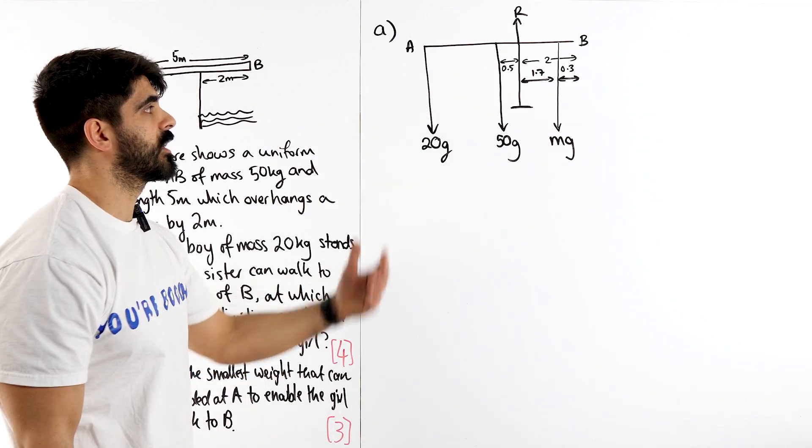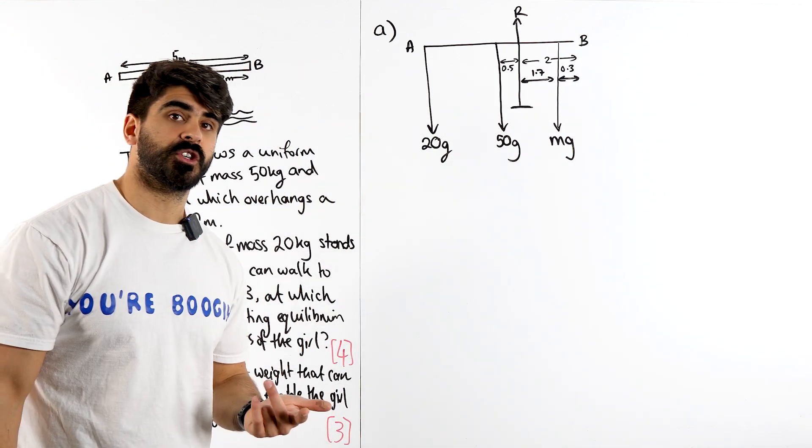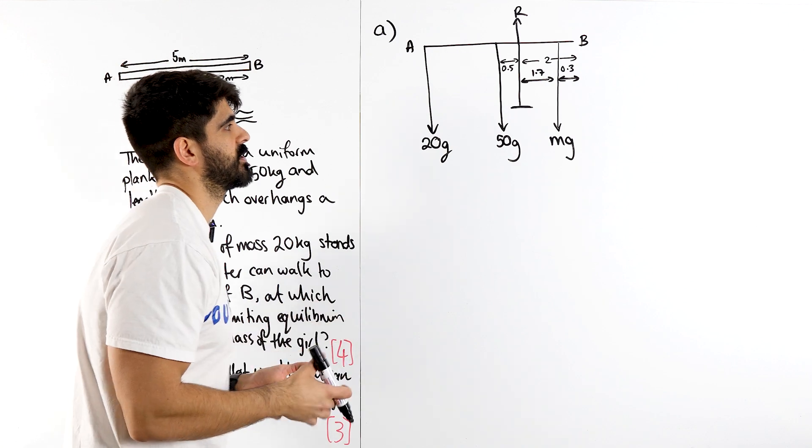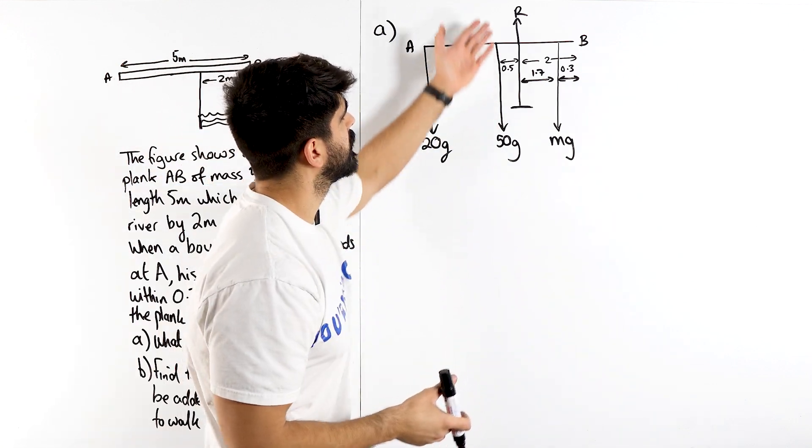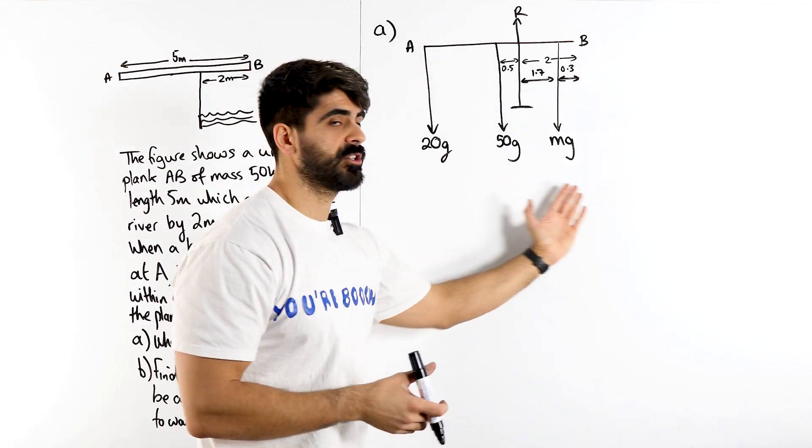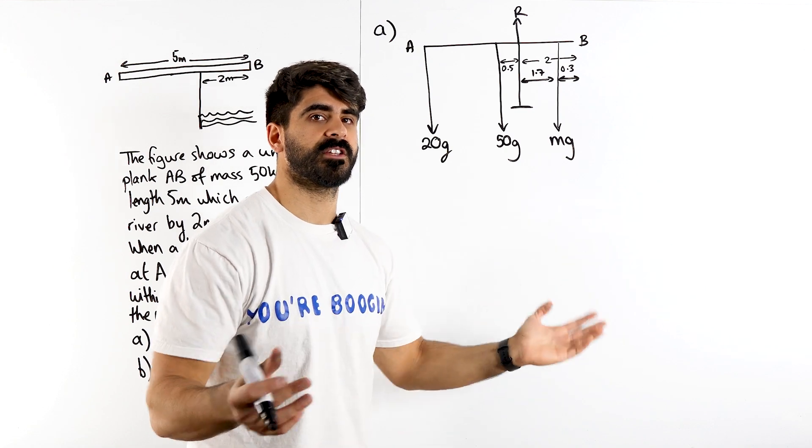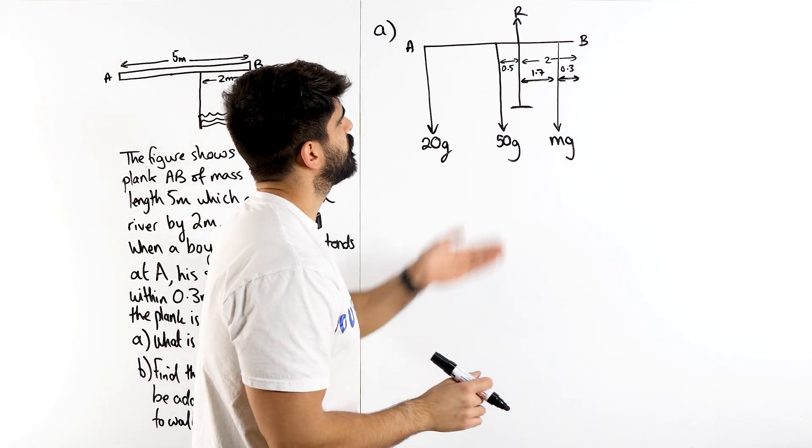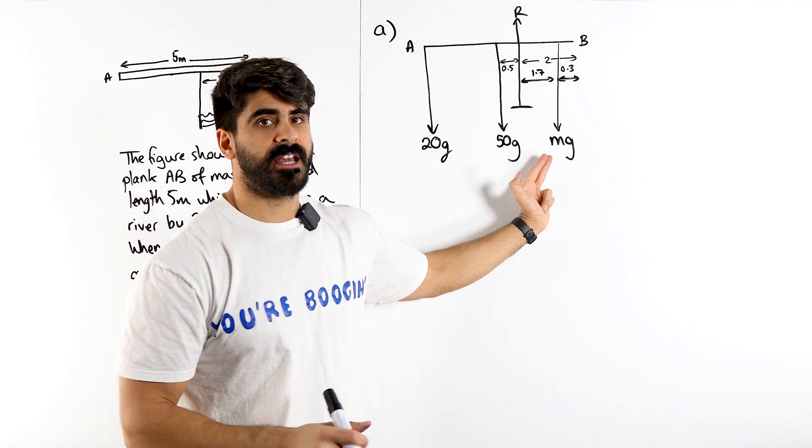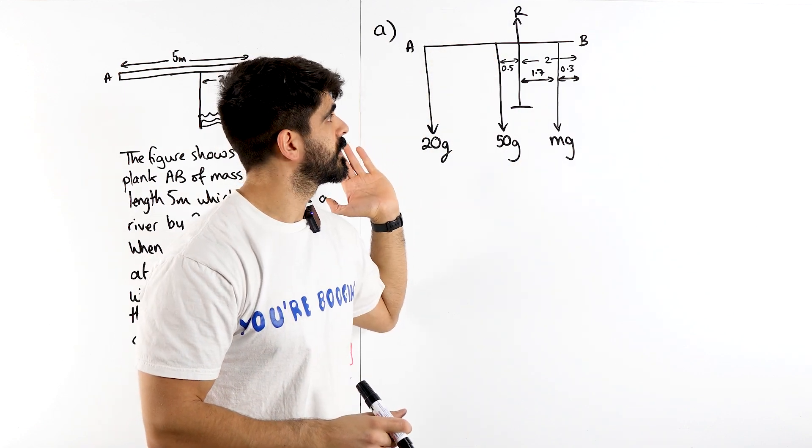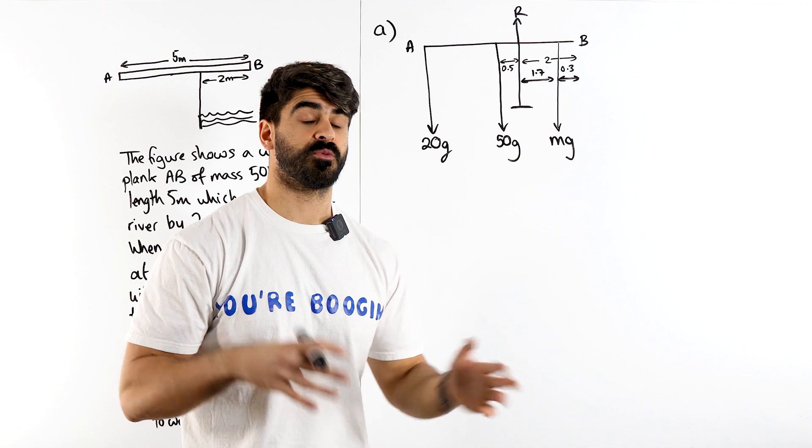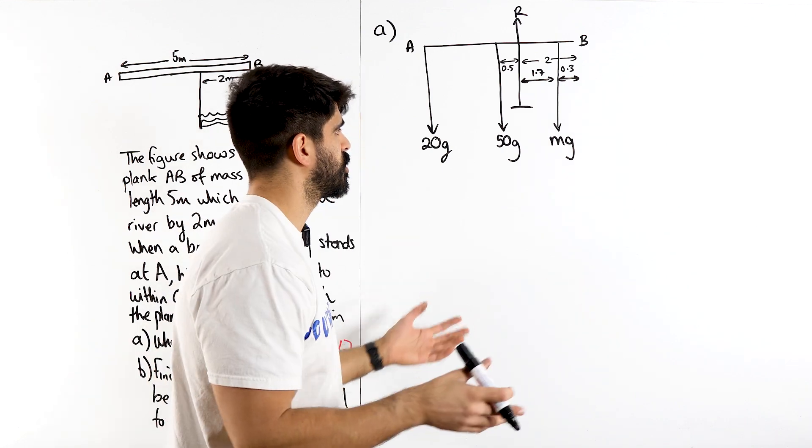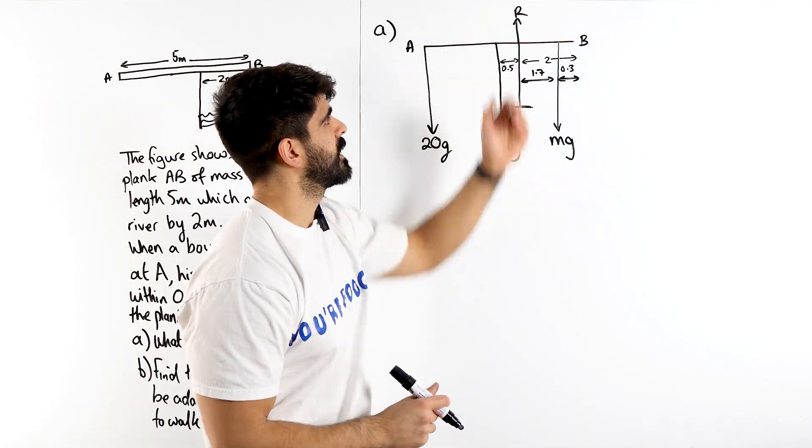Now we can work out what MG is. You might want to say all forces are balanced, so what's pointing up must equal what's pointing down. We do that in year 12, equilibrium of forces. But if you do that you're going to have an unknown R equals an unknown MG and all the rest. If we do something else, we can actually work out MG by getting rid of R.